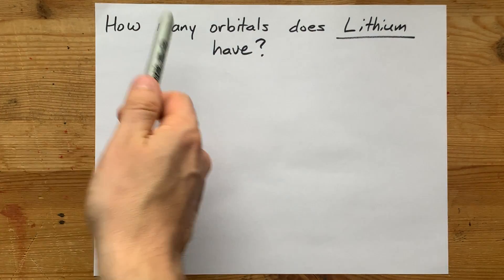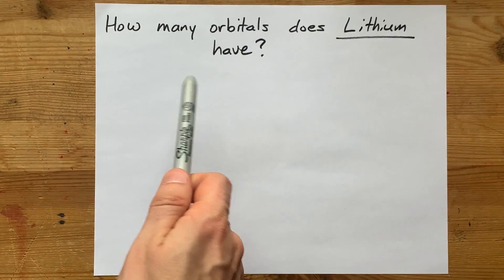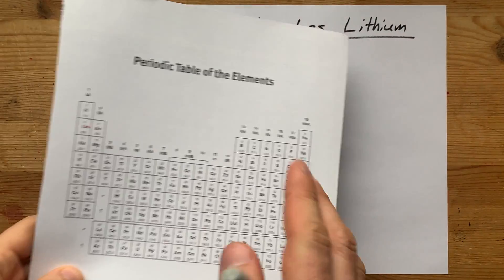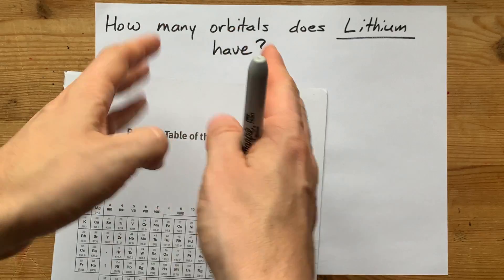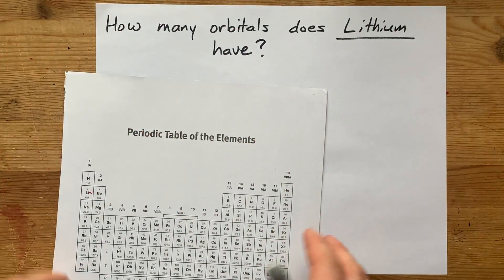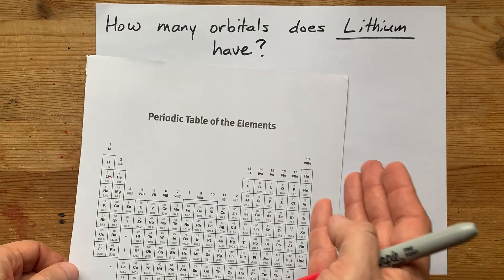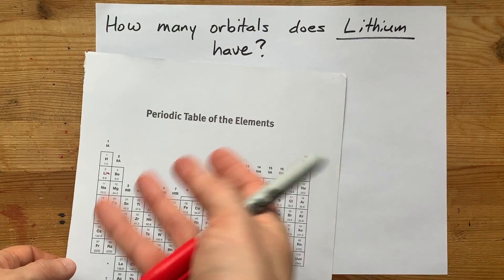If your teacher asks you how many orbitals does lithium have, you need to go up to them and tell them that's a terribly worded question. The official answer is that all atoms have all of the possible orbitals, and there's an infinite number of them. It's just that most of them are empty. So how many orbitals does it have? I don't know, infinite.